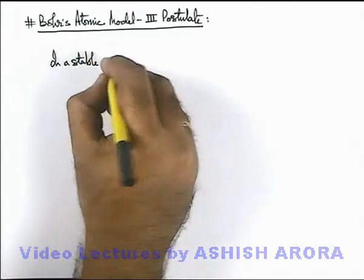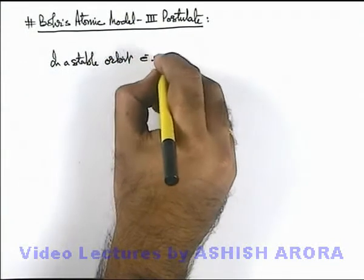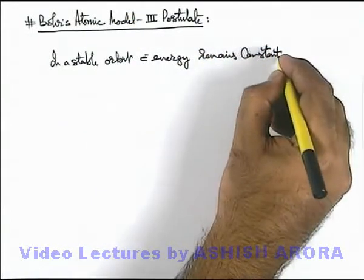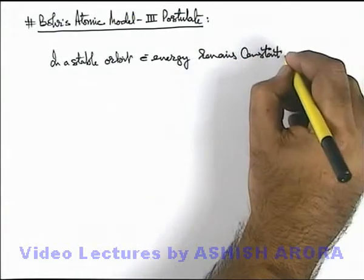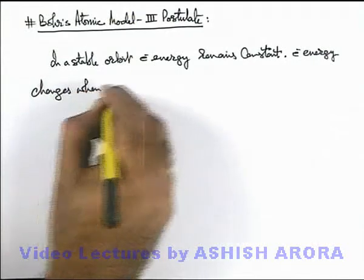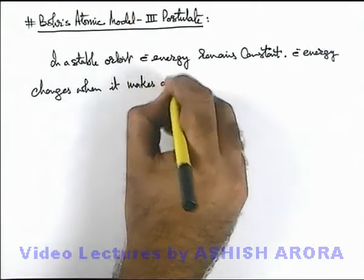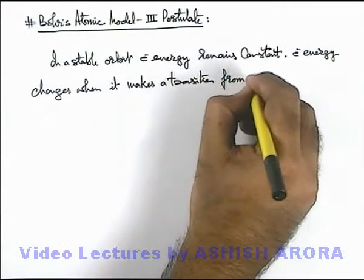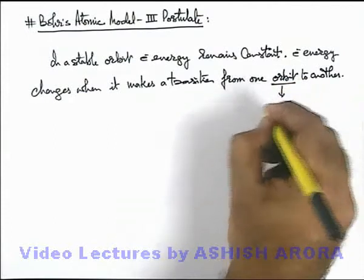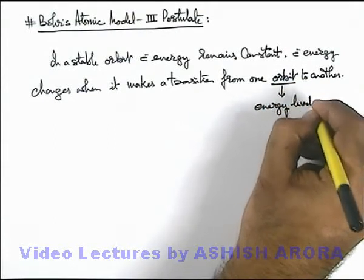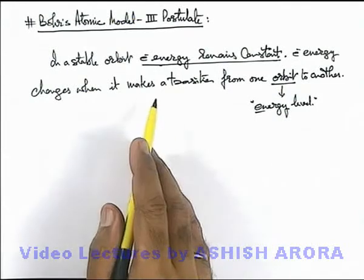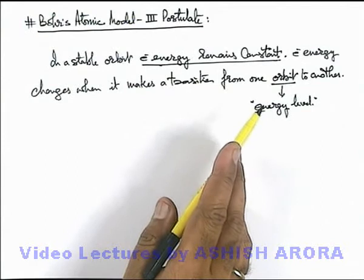About this 3rd postulate, Bohr explained that in a stable orbit, electron energy remains constant. This implies that in a specific orbit, when the electron is revolving, its total energy remains constant. He added that electron energy changes when it makes a transition from one orbit to another. These orbits are also called energy levels because in a specific orbit the energy of the electron remains constant. So each orbit is termed as an energy level, and whenever an electron makes a transition from one orbit or energy level to another, only then its energy changes.